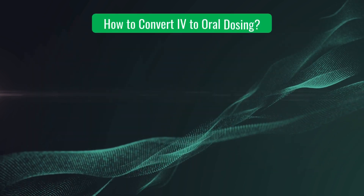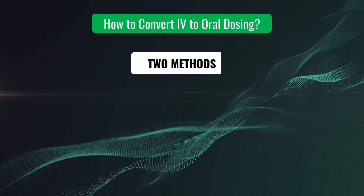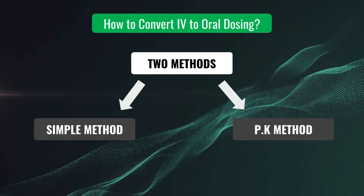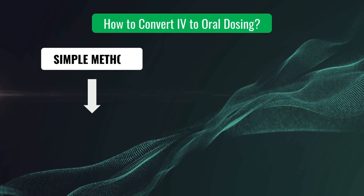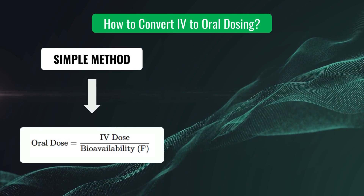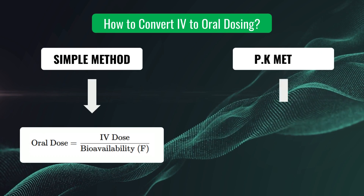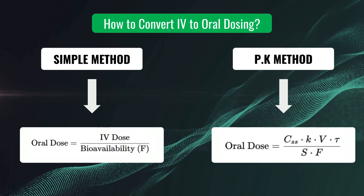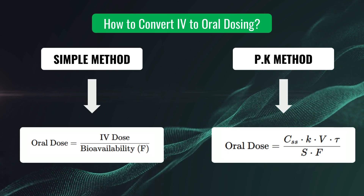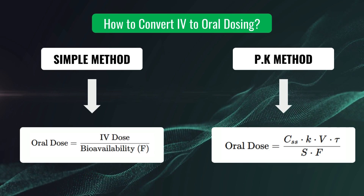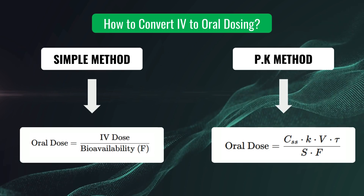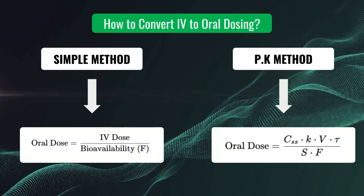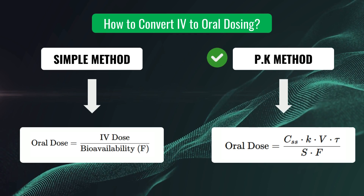Now, the main question: how do we convert IV to oral dosing? We can convert using two methods — a simple method and a pharmacokinetic method. If we don't know many pharmacokinetic parameters and the drug being converted is a simple antibiotic or antihistamine, we can use the simple method. Whereas if we know many pharmacokinetic parameters and the drug is a narrow therapeutic index drug, we must use the pharmacokinetic method.